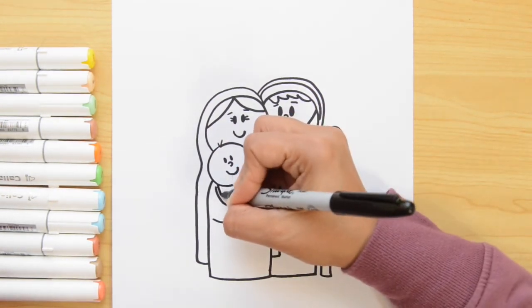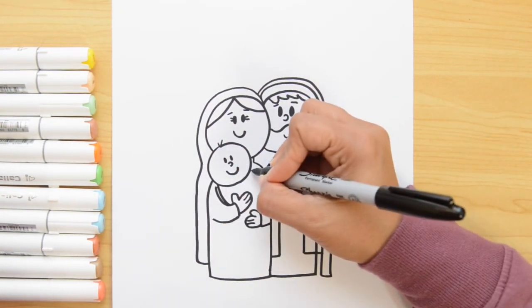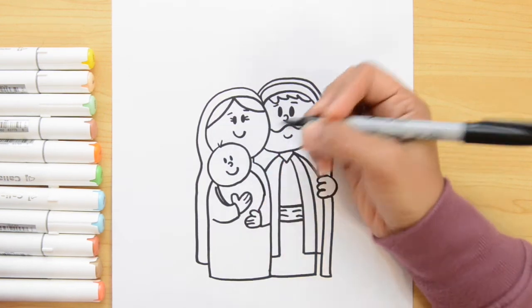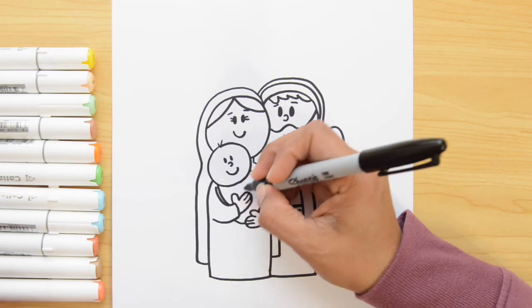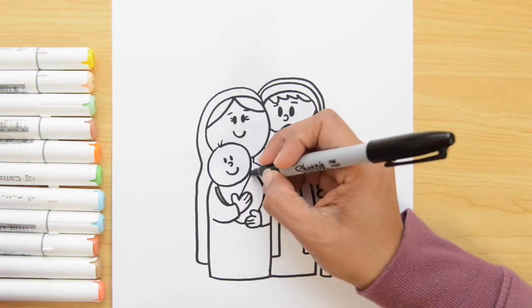Two lines. Now to finish baby Jesus. We're gonna do a curve. That goes around. Just like this. And one more right here. And now let's put a line across the angle. Like right here.